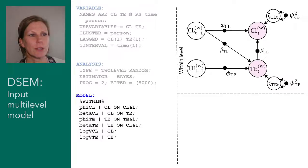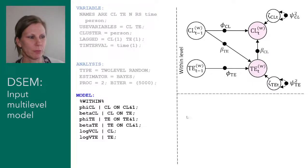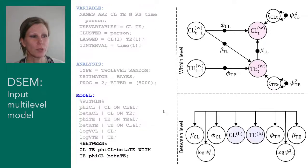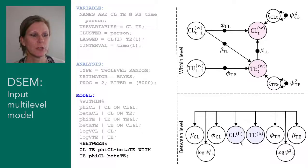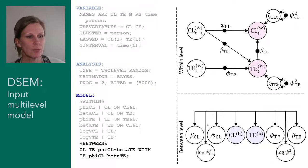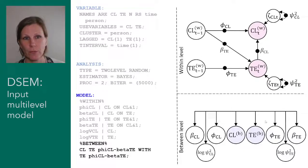All these regression coefficients are allowed to be person-specific or random, indicated by the closed circles showing they take on different values for different individuals. The residual variances are also made random, indicated by the vertical bars. These are not parameters estimated at the within-person level, but instead become open circles or latent variables at the between-person level. So we have four slopes, the random log residual variances, and two person-specific means from the within/between decomposition. These eight random effects are allowed to be correlated with each other, indicated by the with statement and the arrow structure connecting all the variables.